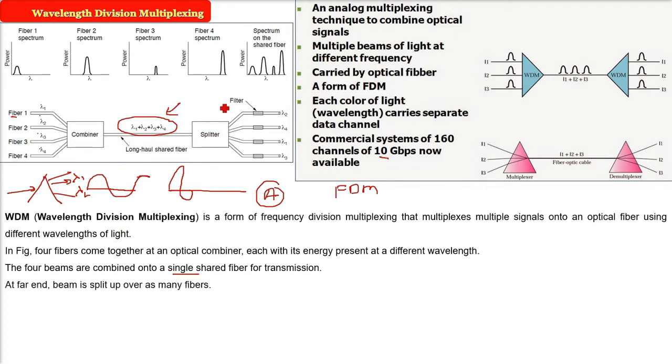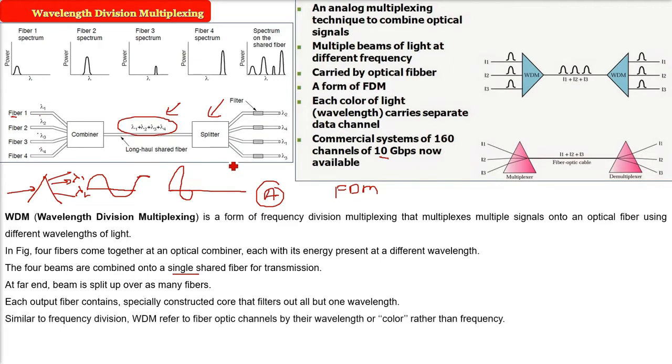What about the receiver end? The beam is split up over as many fibers, many fibers. So, there are different fibers where different wavelengths has been sent. Each output fiber specially constructed core is there that will filter out the only one wavelength or but one wavelength. So, this is similar to frequency division. WDM is referring to fiber optic channels by their wavelength or you can call it as a color rather than frequency.